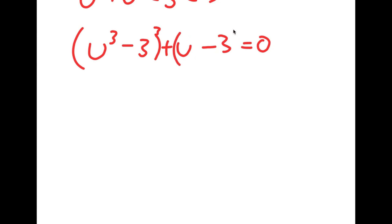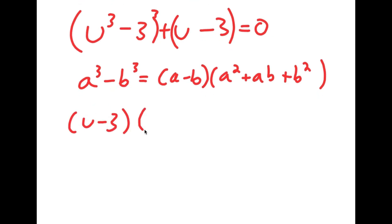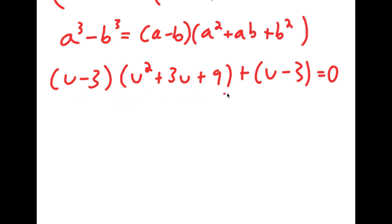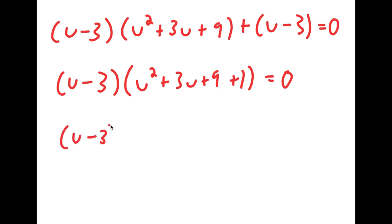If I have something in the form a to the power of 3 minus b to the power of 3, this equals a minus b times a squared plus ab plus b squared. So in this case, this turns into u minus 3 times u squared plus 3u plus 9 plus u minus 3, which equals 0. Because both terms have a common factor of u minus 3, I factor out u minus 3 to get u minus 3 times u squared plus 3u plus 9 plus 1 equals 0. And since 9 plus 1 is 10, I get u minus 3 times u squared plus 3u plus 10 equals 0.